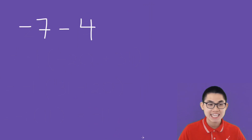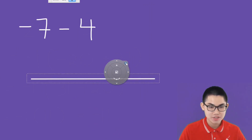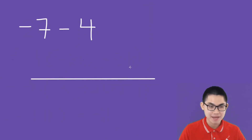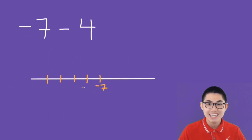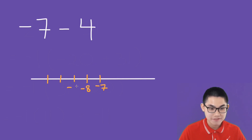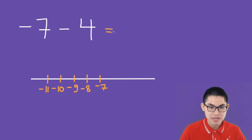We have negative 7 minus 4. Let's use a number line this time. We start at negative 7. We move to the left 4 times: 1, 2, 3, 4. This is negative 8, negative 9, negative 10, negative 11. So the answer will be negative 11.